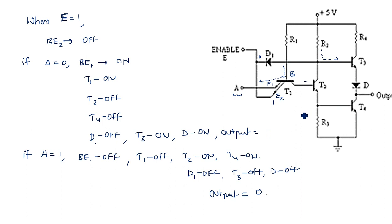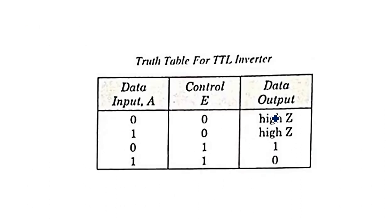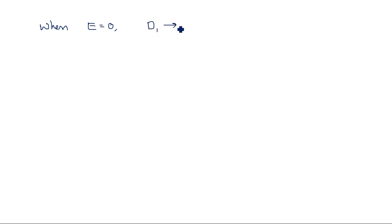So when enable is equal to 1, it is acting as an inverter. Now what happens when enable is equal to 0? The status of diode D1 is very important because it will alter the entire operation to make the output a high impedance state.